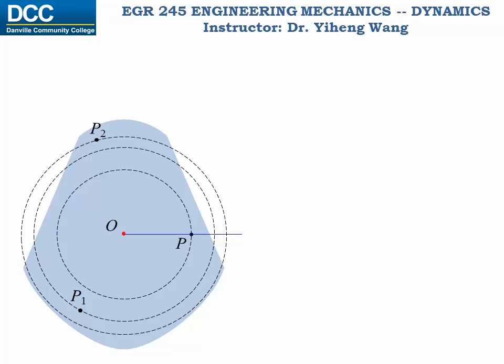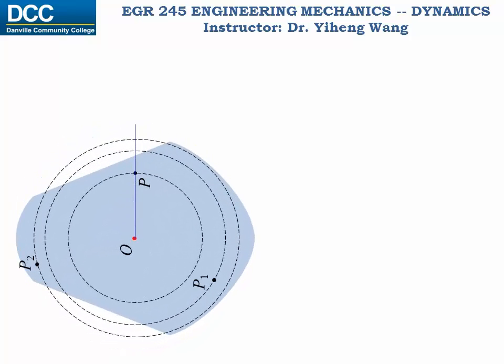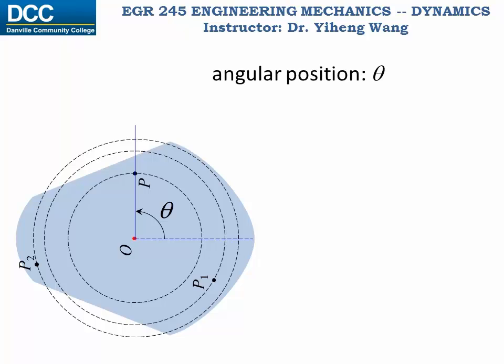And after some time, it has rotated to a new position. Compared to its original position, it has rotated by an angle theta, and theta is known as the angular position for this rigid body during rotation. It has the unit of radians, and we know that for an angle the unit of radians is dimensionless.